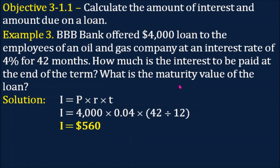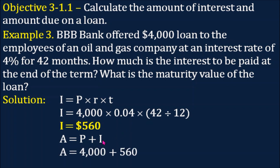Now, the maturity value is equal to P plus I — the amount borrowed plus the interest. So, $4,000 plus $560 means the maturity value is $4,560.